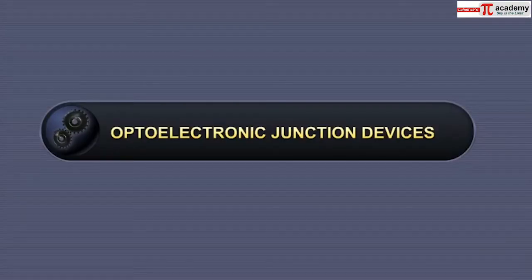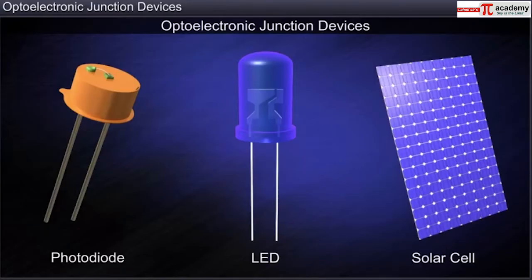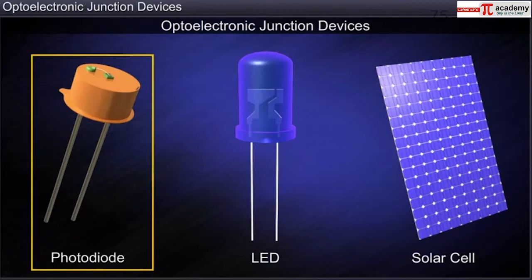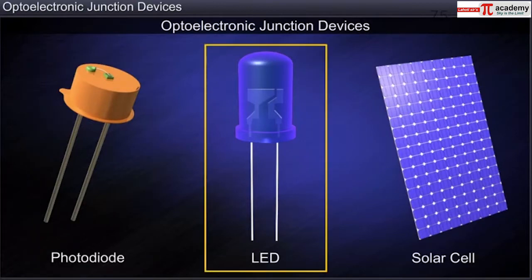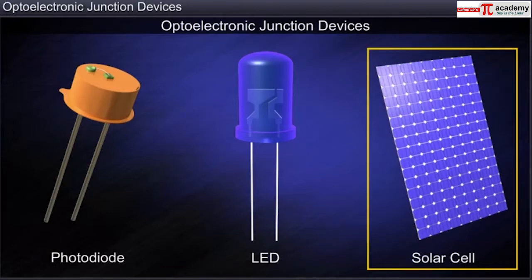In this module, you will learn about optoelectronic junction devices — PN junction devices which work because of the current carriers that are generated by photons. Photodiodes, light emitting diodes which are referred to as LEDs in short, and solar cells are examples of optoelectronic devices.